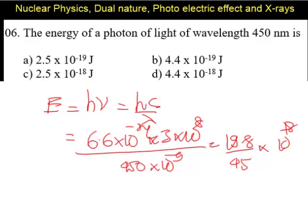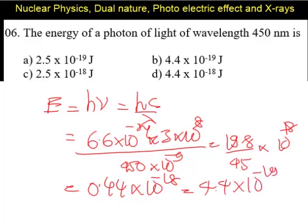19.8 by 45 into 10 power minus 18. Solving this relation, we will have 0.44 into 10 power minus 18 or 4.4 into 10 power minus 19 joules. So the correct choice is 4.4 into 10 power minus 19 joules B.